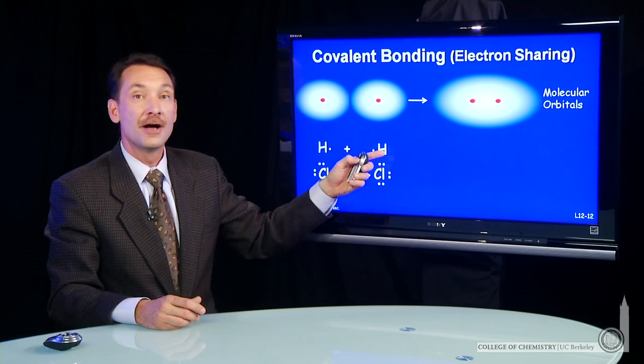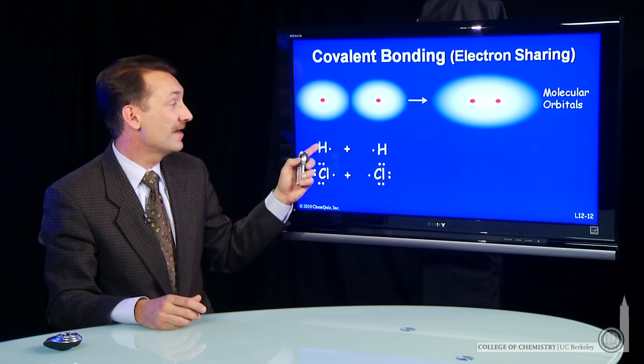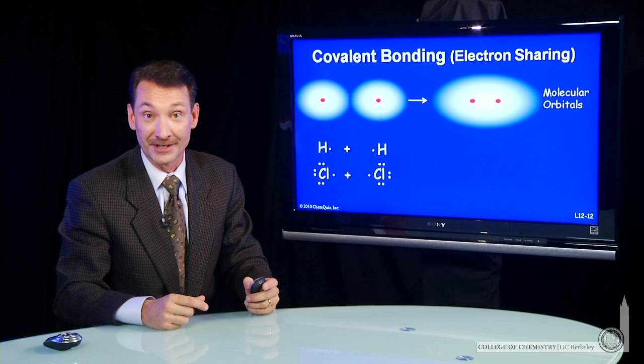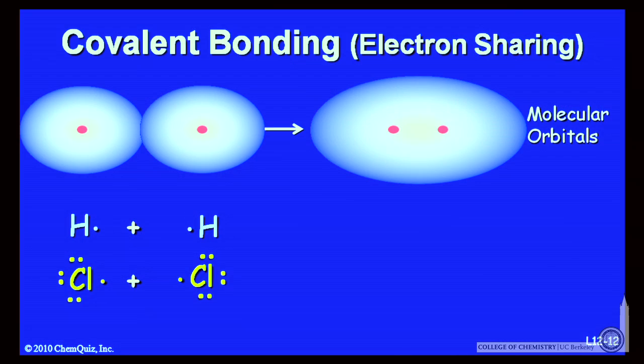When hydrogen and another hydrogen bond, they can fill their outer shell, get to that stable two electron configuration by sharing an electron between them.